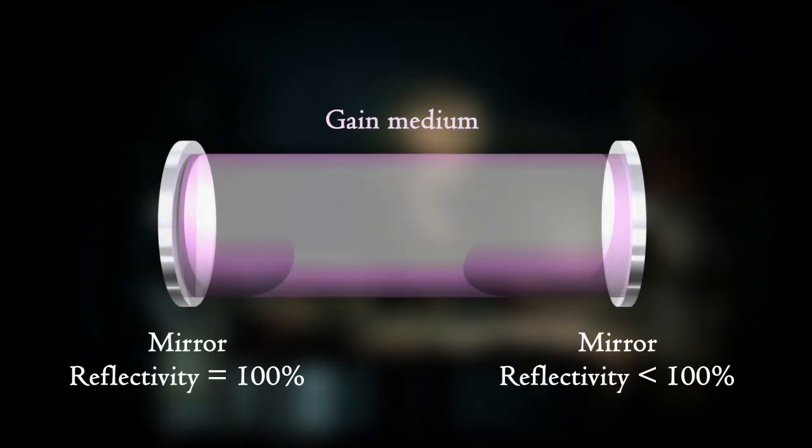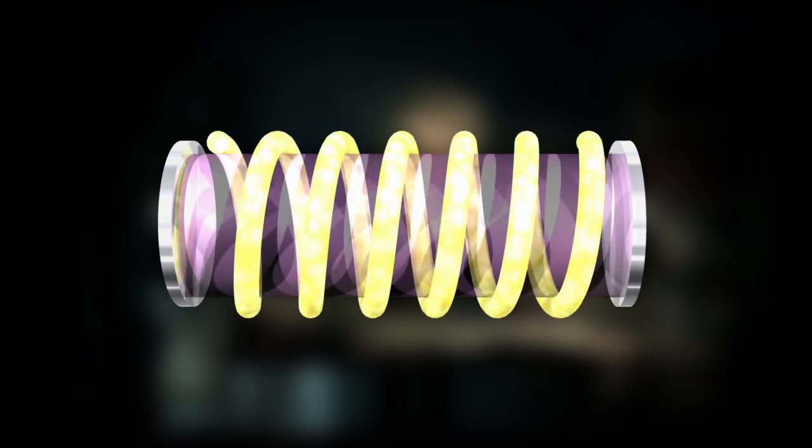Another part we need is an energy source in order to use photons to raise electrons from a lower energy level to a higher one, a process called optical pumping.